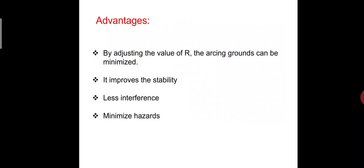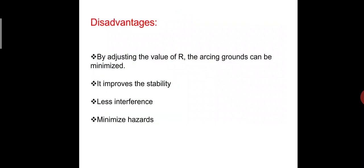Advantages of resistance grounding: By adjusting the value of resistance R, arcing grounds can be minimized. It improves stability, causes less interference, minimizes hazards, and reduces the risk of arcing grounds. Ground fault current is lower than in a solid grounding system.